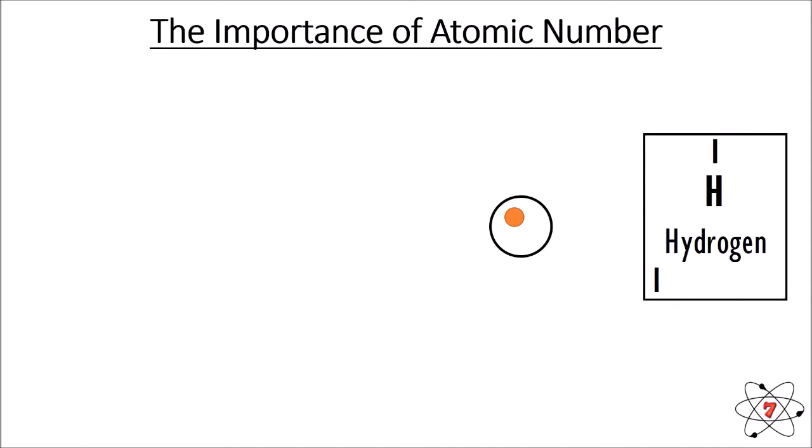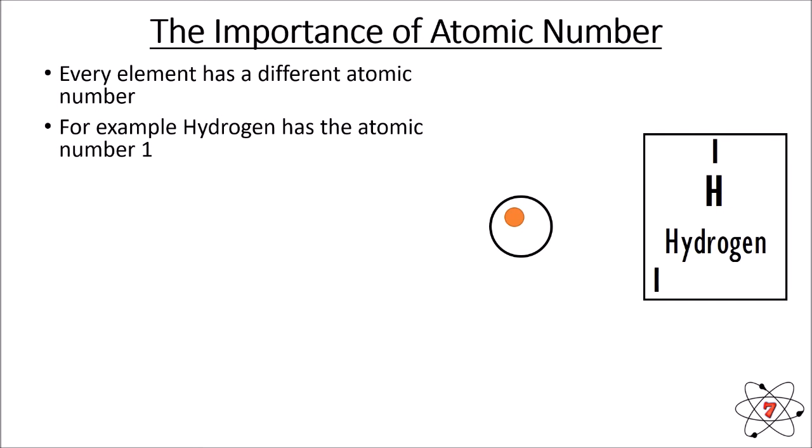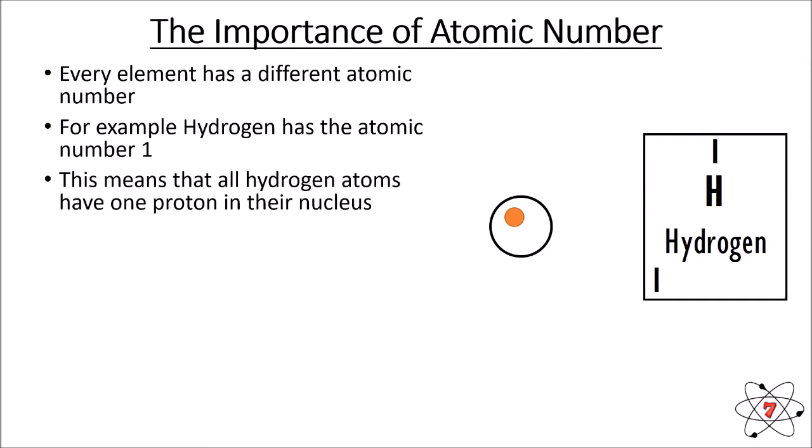I've mentioned this in previous lessons but I want to make sure you really understand it. Every element has a different atomic number. Hydrogen has the atomic number one, which means that in the universe all hydrogen atoms — every single one — has got one proton in its nucleus. It cannot have two protons; if it had two protons it would no longer be hydrogen.